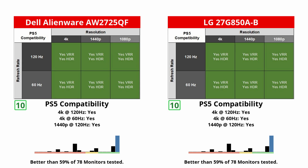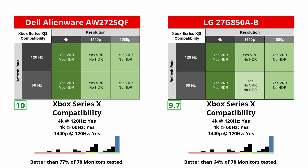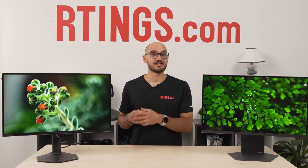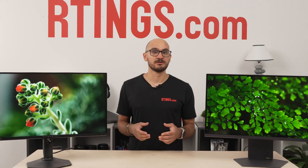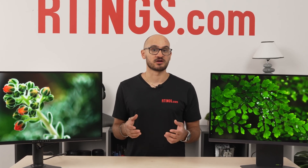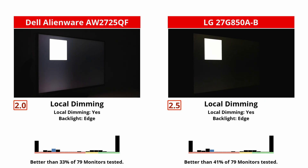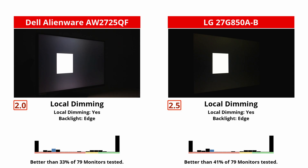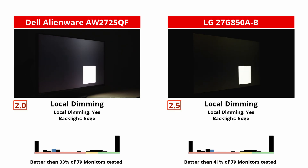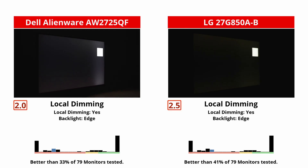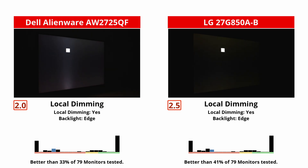They both support the same VRR formats and work well with gaming consoles. One difference is that the Dell supports Dolby Vision with an Xbox, which the LG doesn't. That said, the Dell can't really take advantage of that Dolby Vision support because of its limited picture quality in HDR. In fact, both monitors struggle with HDR. The LG has a higher native contrast ratio because it uses an IPS black panel, but both are limited by their terrible local dimming features. They're each edge-lit and fail to improve the black levels, with a ton of haloing around bright objects. Small highlights are also muted on both monitors when you use local dimming.